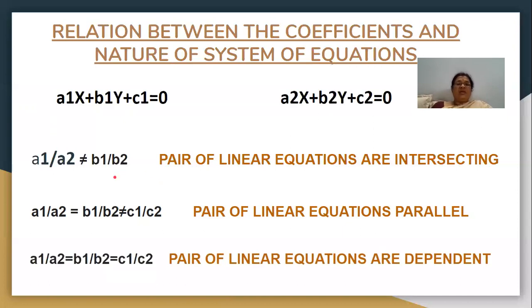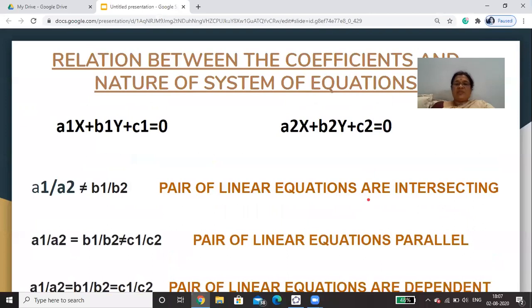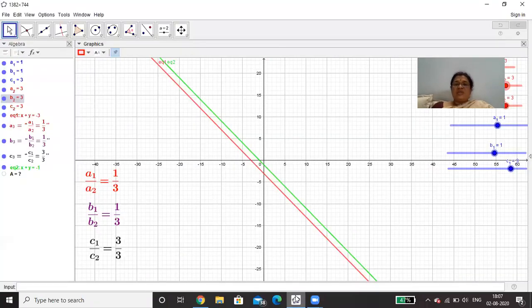The third condition: when a1 by a2 and b1 by b2 and c1 by c2 are all equal, then you can say that the lines will be dependent — meaning they coincide, so one line will lie on top of the other. Now I'll show the graphical representation for these conditions.